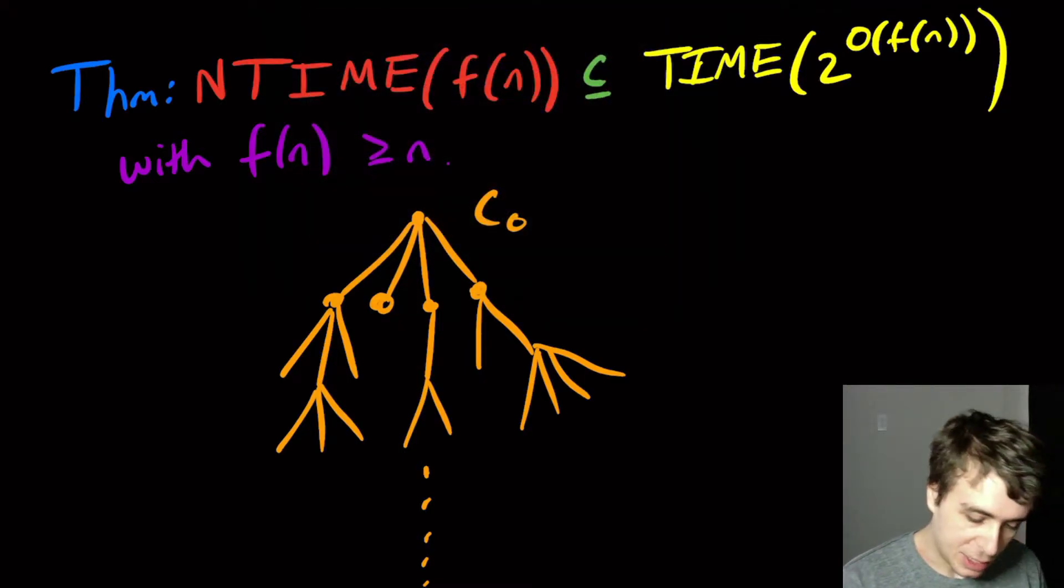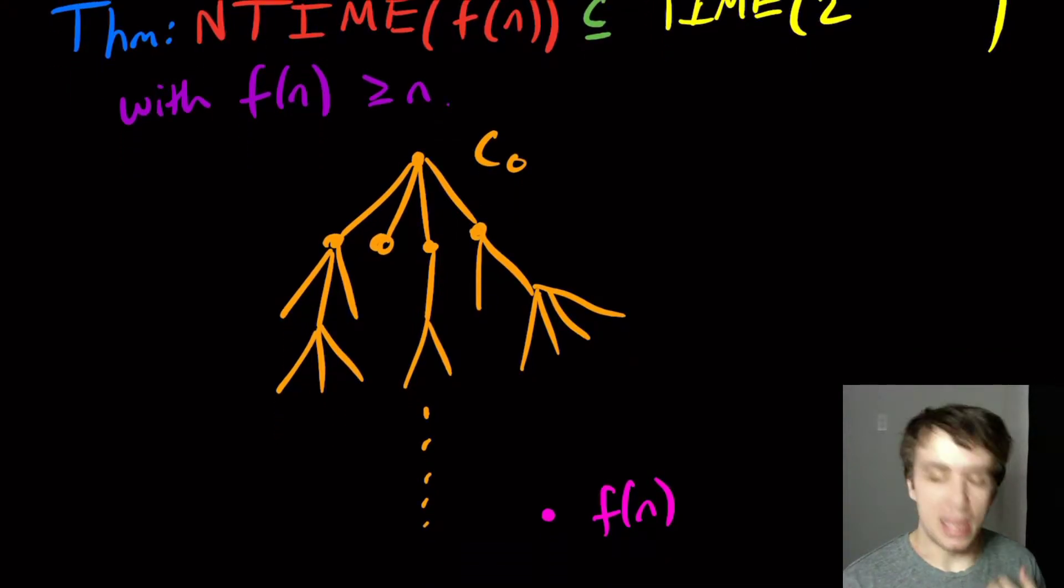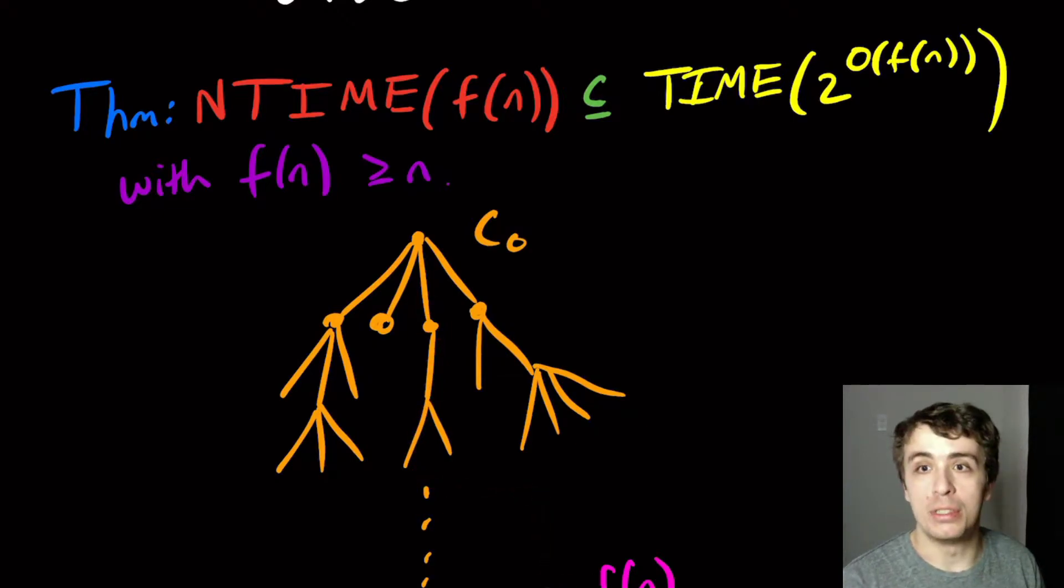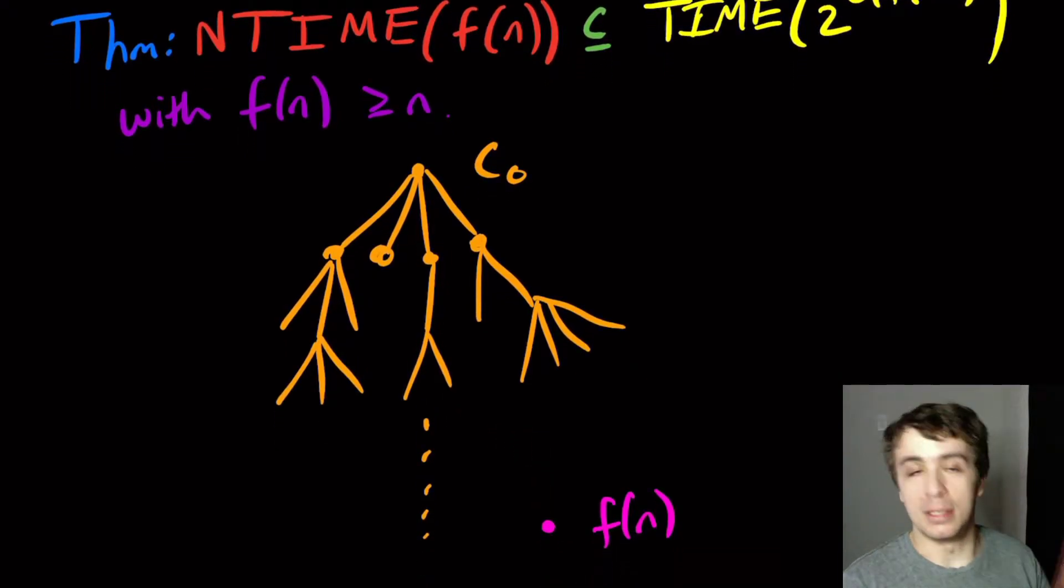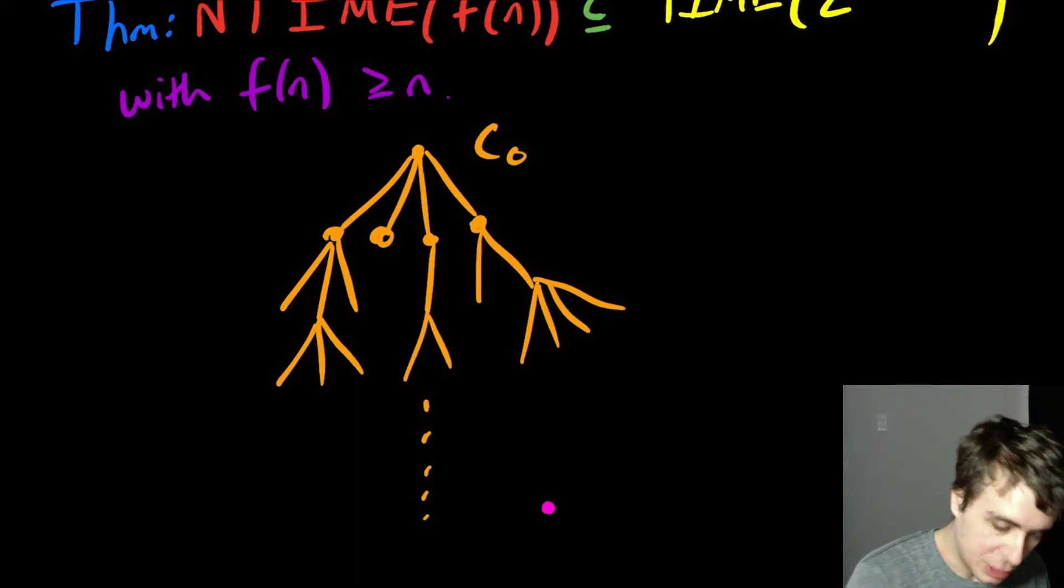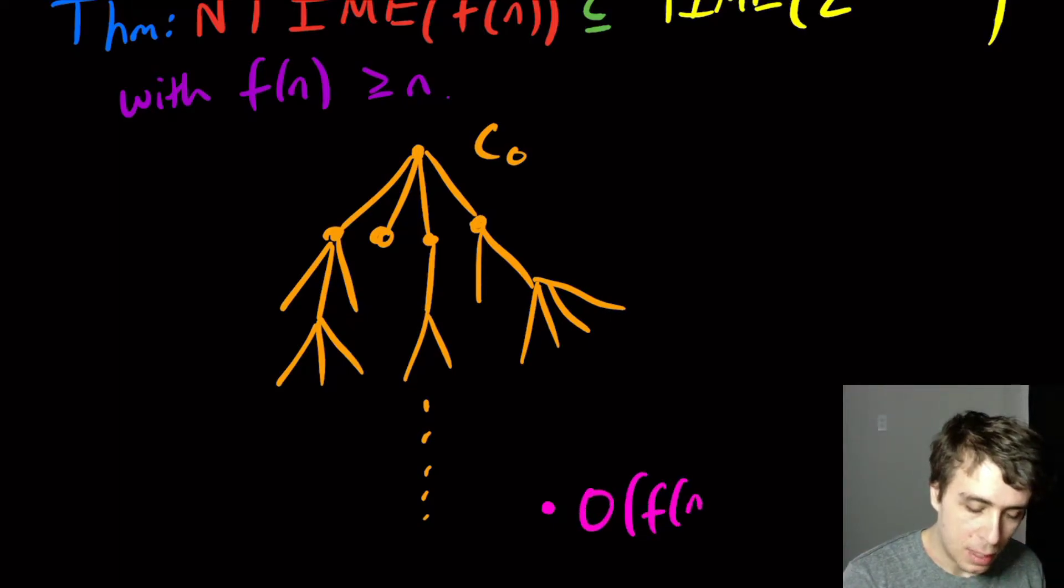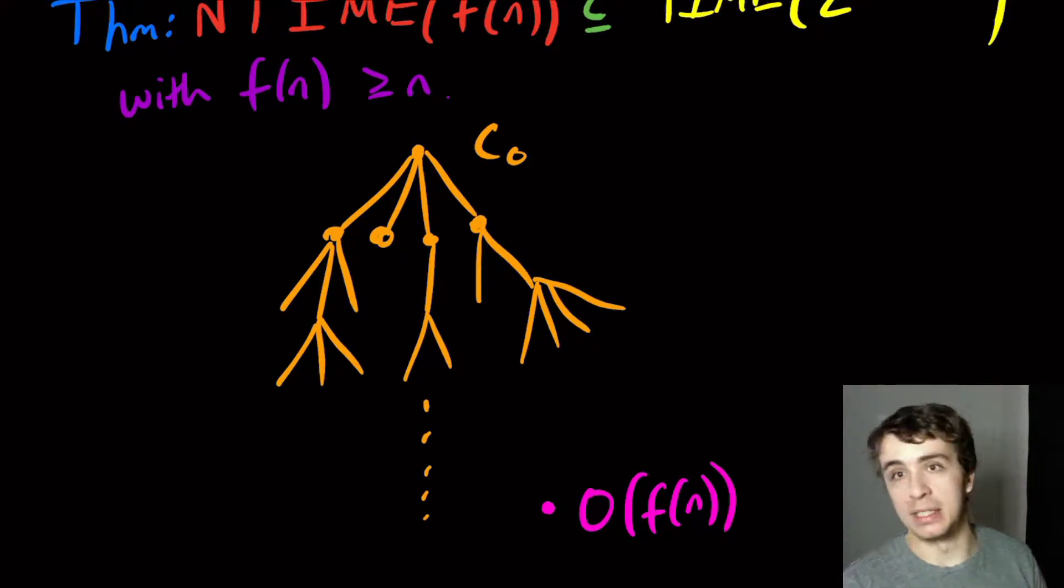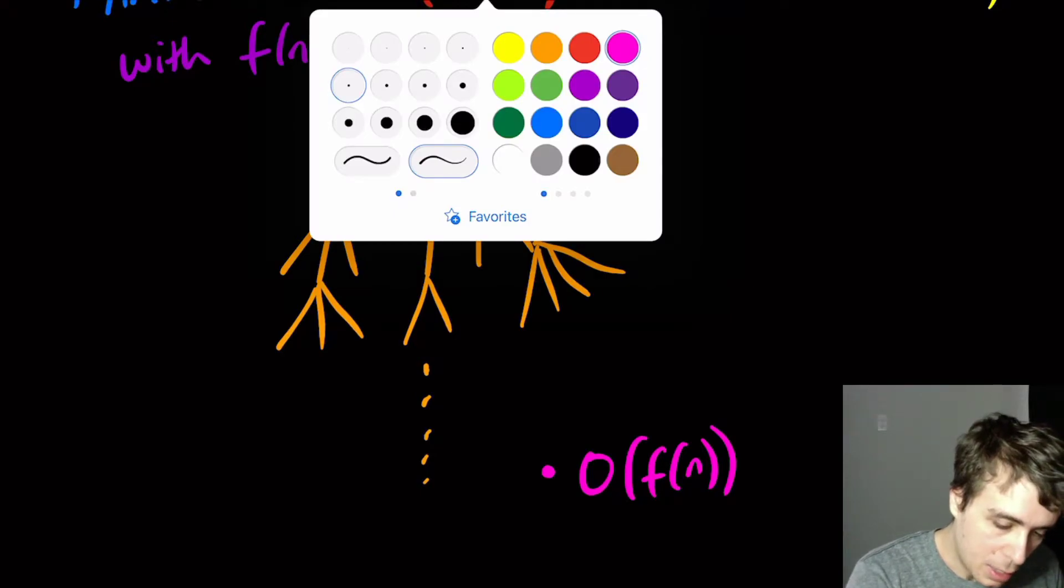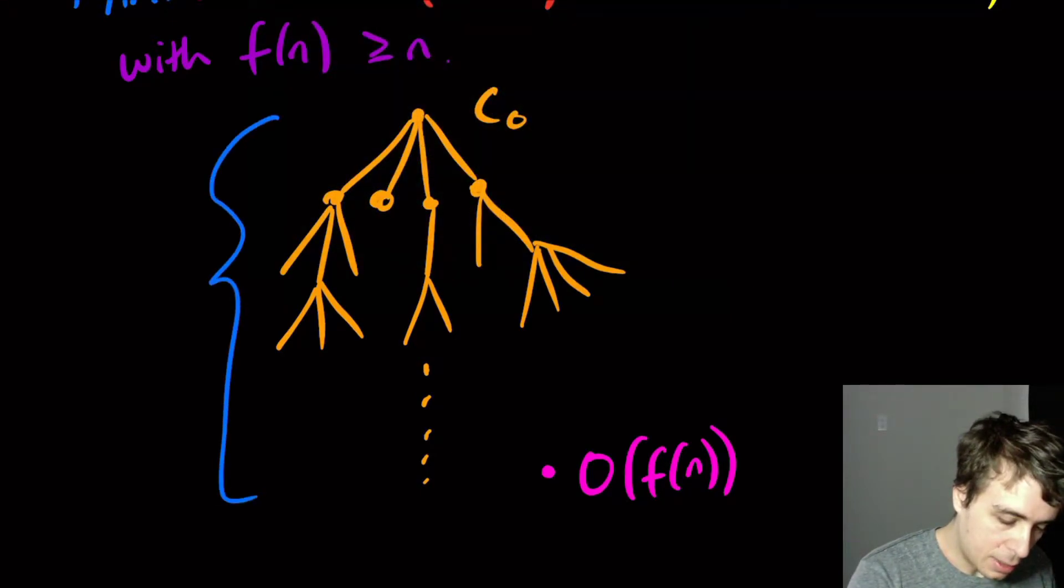So what we want to figure out is, let's say that an accepting node here is at depth f(n). And we know that it's at depth f(n) because the non-deterministic machine will make the right choice to be able to hit this node down here at the bottom. And so since it runs in f(n) time, this is at depth f(n). Actually, we should say for complete correctness, it's big O of f(n) because non-deterministic time ignores the constant here. So what this is saying is we have depth here which is big O of f(n).